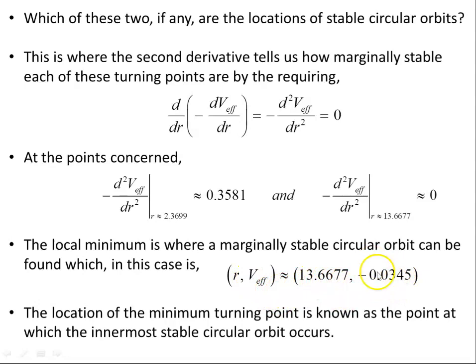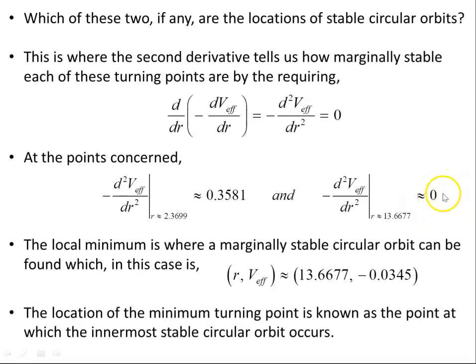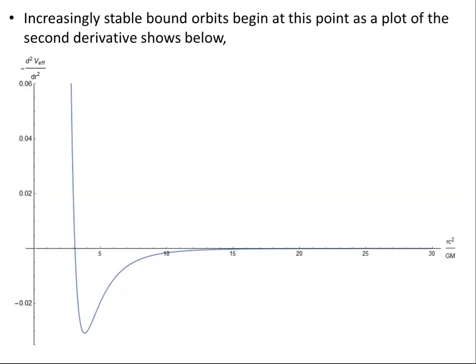Here's the radial coordinate and the effective potential value. When I say marginal stability, it's close to zero but not quite — for strict stability you require the second derivative to be exactly zero, but when you're almost zero you're effectively close. This might be 10⁻¹⁰ or something in natural units. The location of the minimum turning point is known as the point at which the innermost stable circular orbit occurs. The next video will focus on finding that innermost stable circular orbit and its expressions.